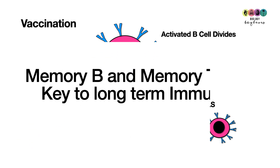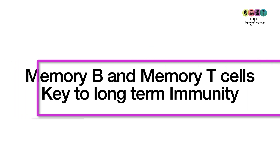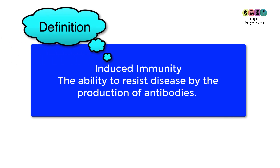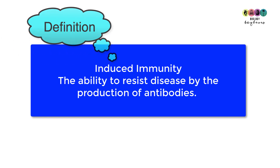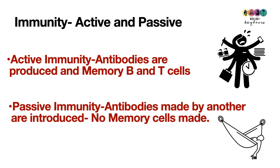It's the memory B cells and memory T cells that are essential to long-term immunity. Anytime antibodies are produced, it's called induced immunity — the ability to resist disease by the production of antibodies. All of this vaccination process is part of induced immunity.